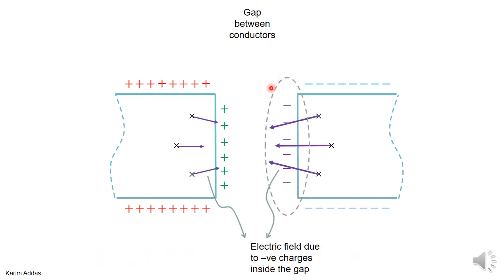Looking at those six representative points: the negative charges in the gap make an electric field pointing toward the negative charge. It's a large value at nearby points because the distance is small. At the farther points on the other side, the same negative charges make an electric field toward themselves, but of a lower value because the distance is greater.